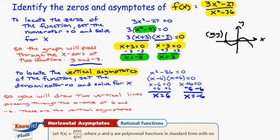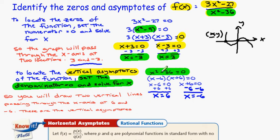And in order to do that, what we want to do is set the denominator equal to zero, and then solve for x. So if you look at our function here, our denominator is x squared minus 36. So we're going to set that equal to zero, and then we'll factor this.